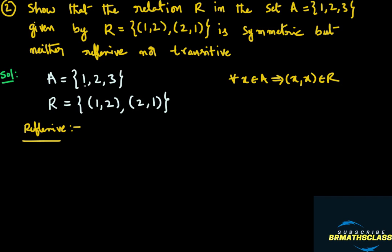Now, take element 1 in set A. Is ordered pair (1,1) there in this relation? Ordered pair (1,1) is not there in this relation. So we say that R is not reflexive.